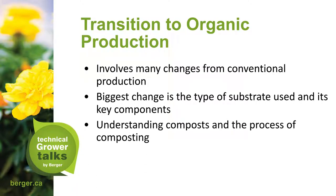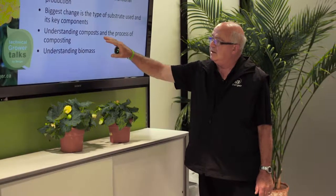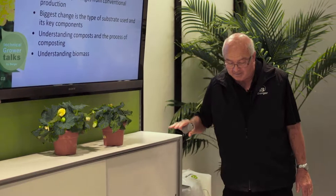The technical growers talk I'll be covering is making the switch to organic. Transitioning to organic production involves changes from conventional production. The biggest change is the type of substrate used and its key components — understanding compost and the composting process, and understanding biomass. Our main component is still peat moss, which greatly assists in aeration, drainage and porosity, but now we have to concentrate on the type and quality of compost and the biomass, which is the microorganisms found in the compost.